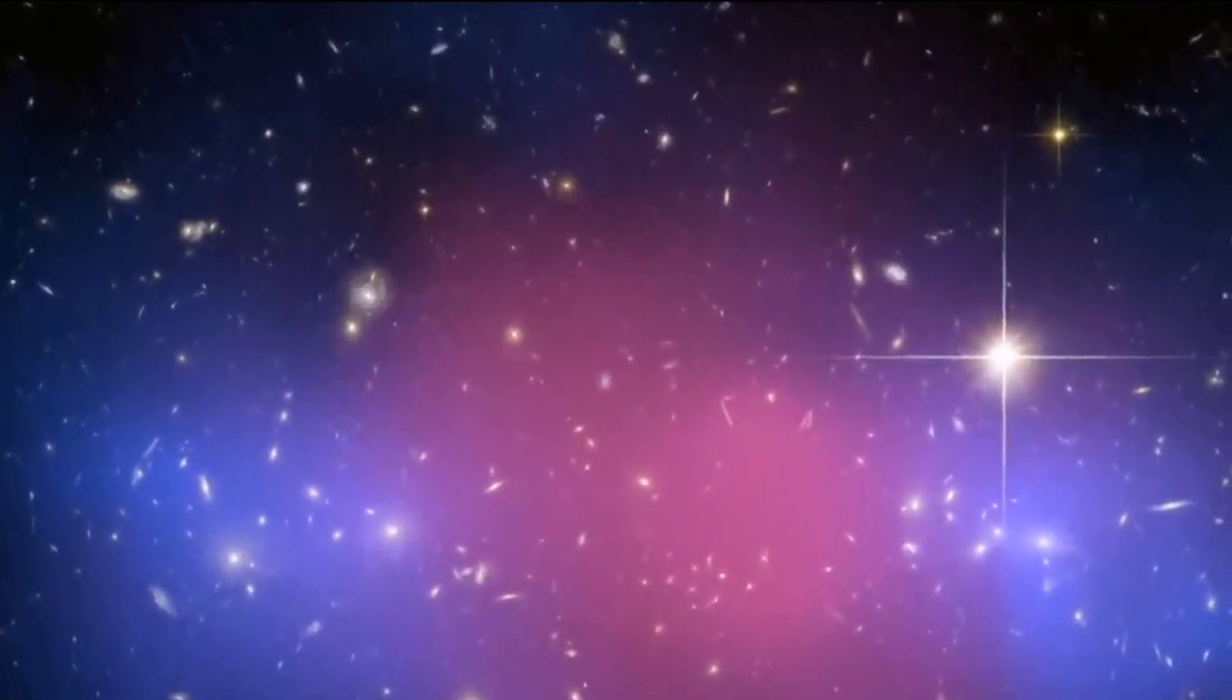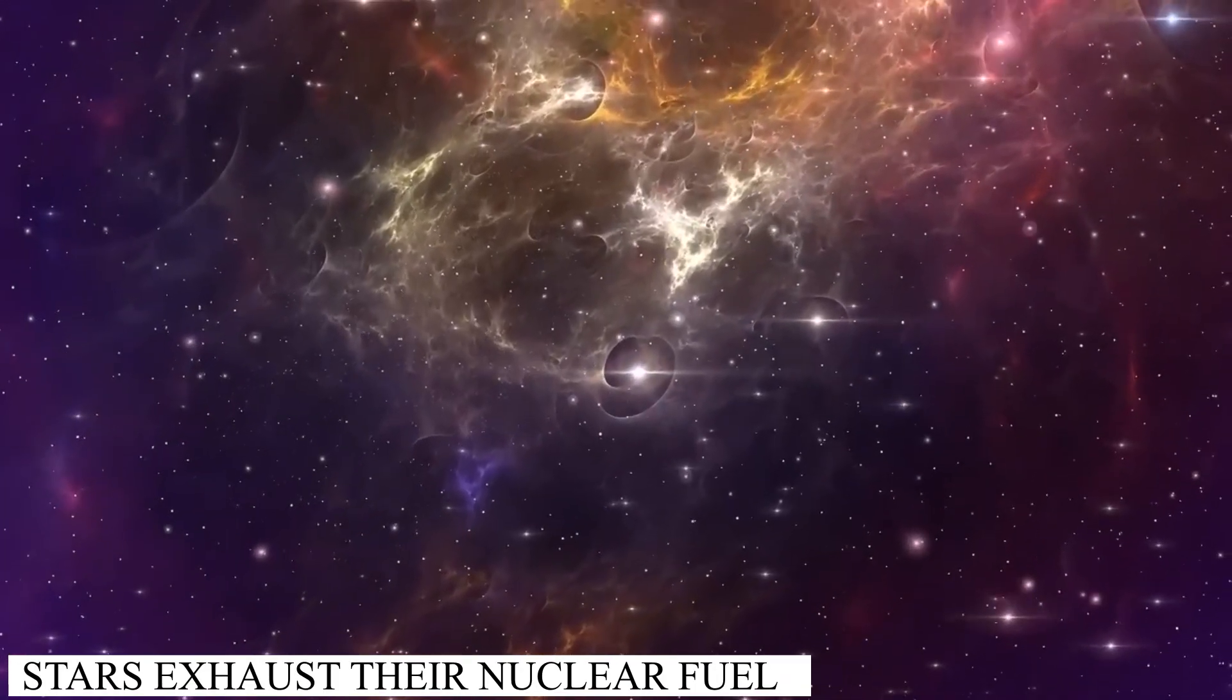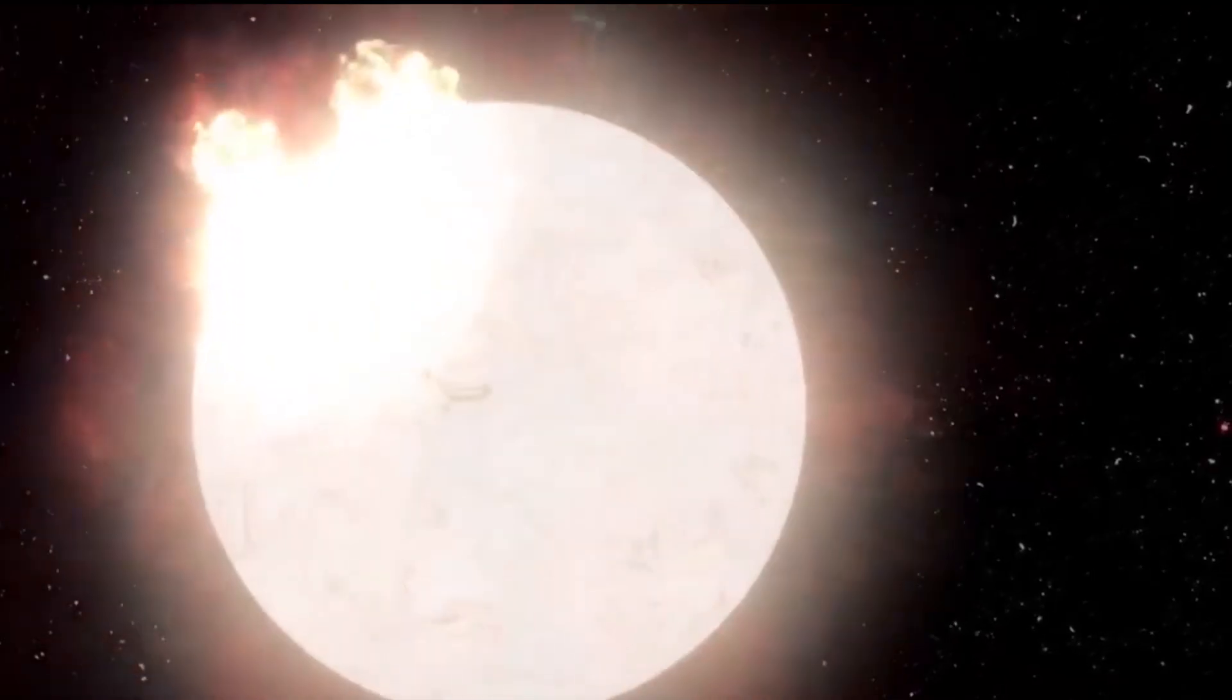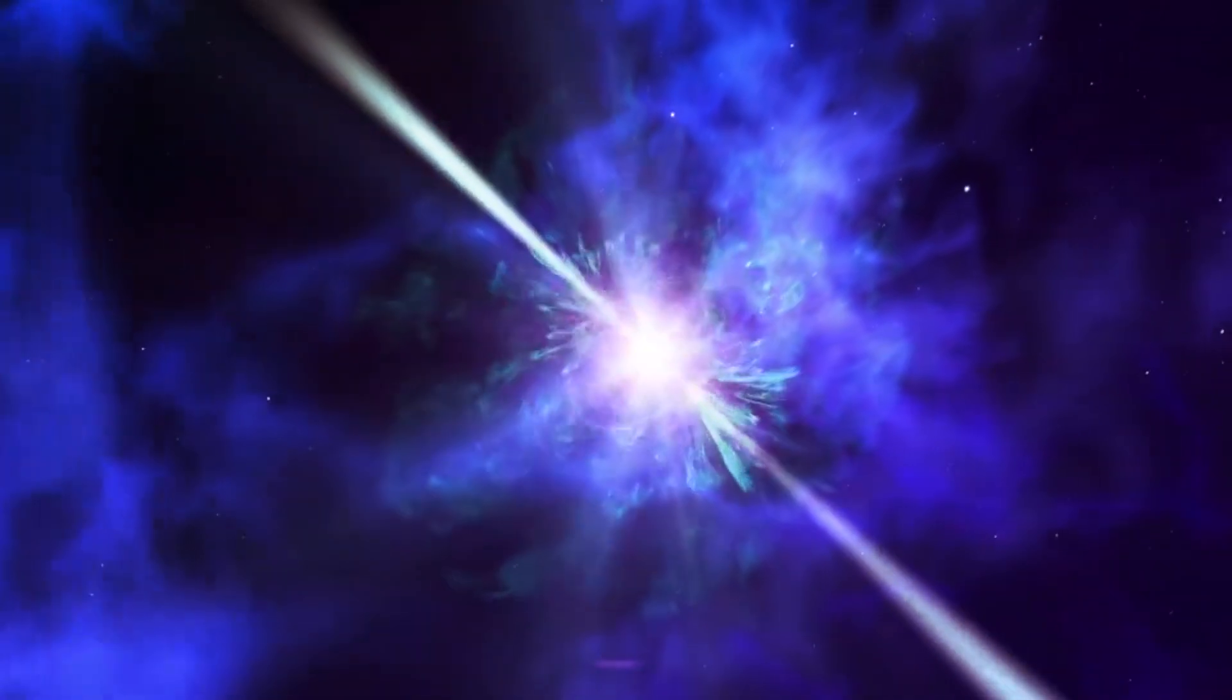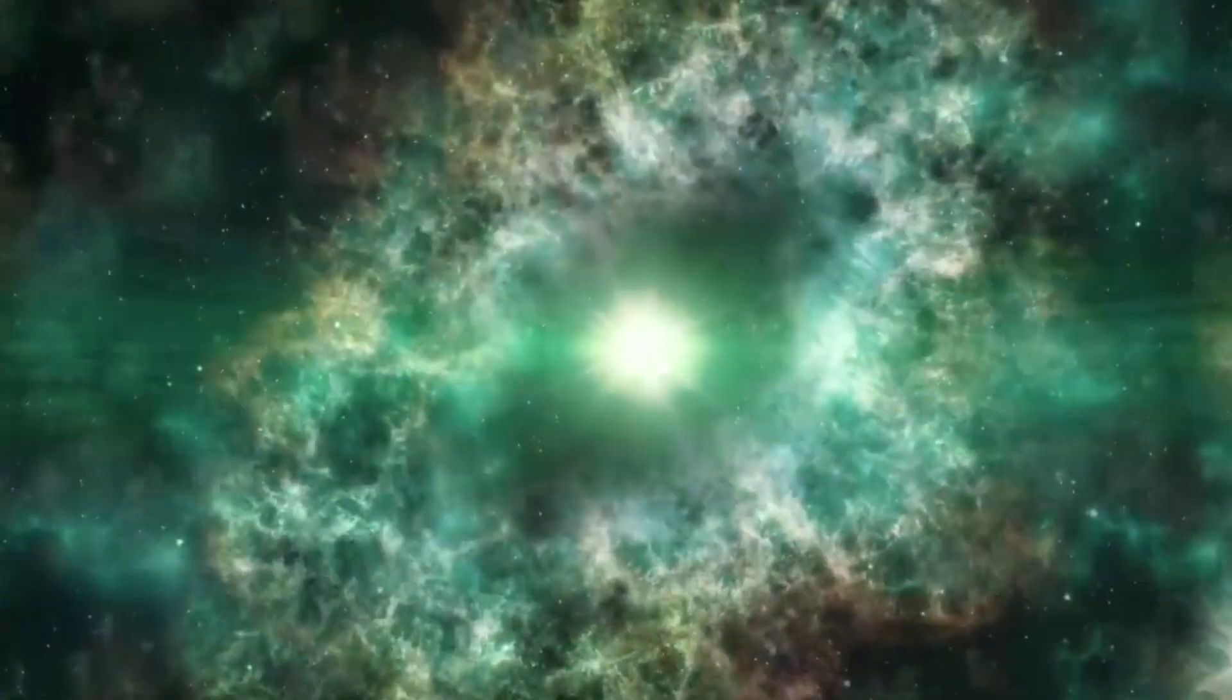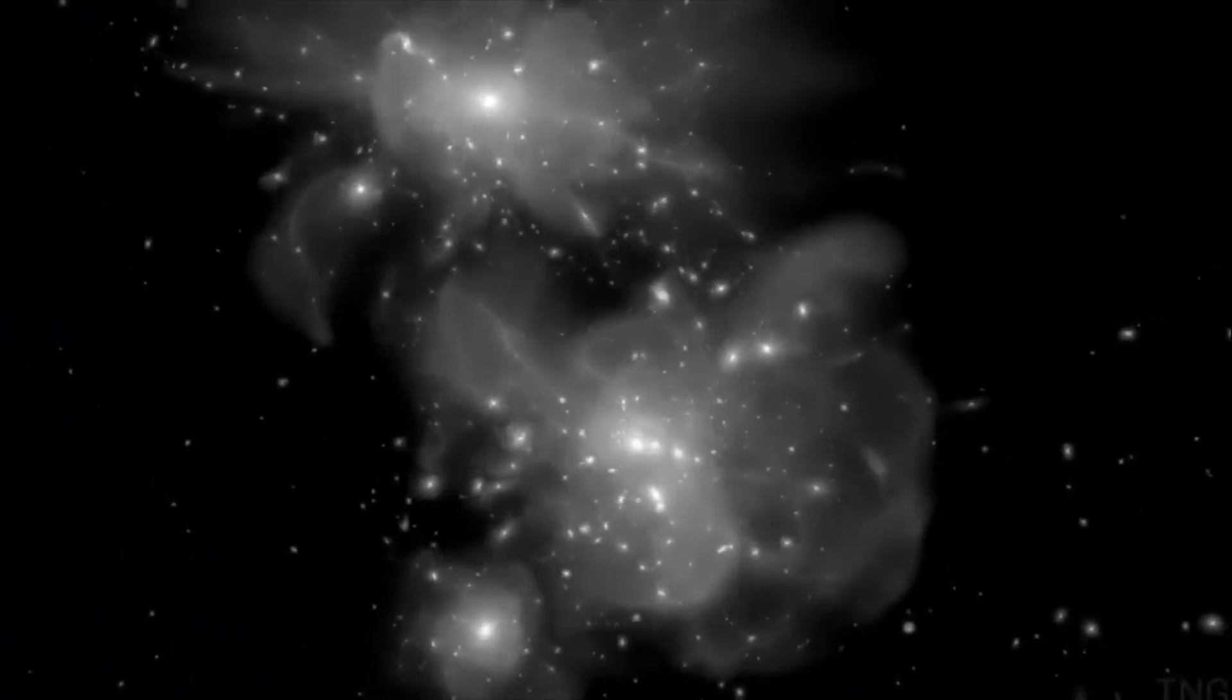One of the leading reasons for the disappearance of stars revolves around their inevitable demise. Stars exhaust their nuclear fuel over time, leading to a cataclysmic event known as a supernova. During a supernova, a massive explosion occurs, releasing an enormous amount of energy and scattering the star's outer layers into space. What remains is a dense core in the form of either a neutron star or a black hole. In some cases, the core may be obscured by dust and gas, making it difficult to detect from Earth and giving the appearance of a disappearing star.